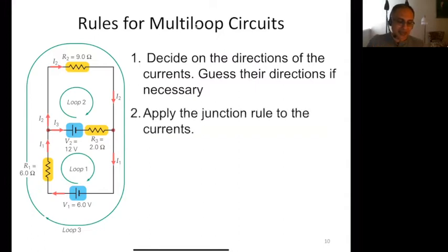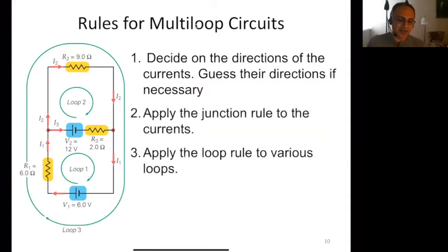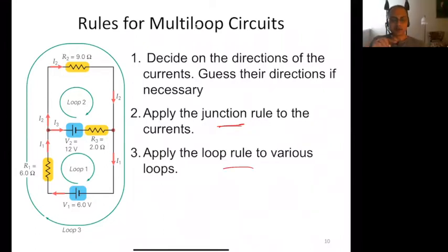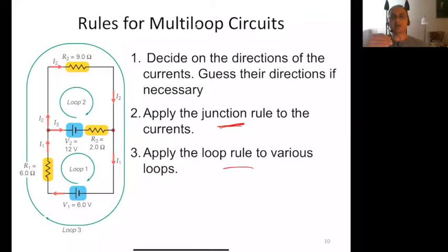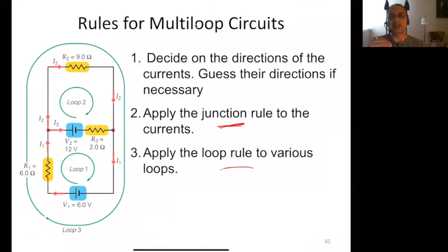You've already applied the junction rule to the currents to make sure they're consistent. The next thing you do is apply the loop rule to various loops. Suppose there are three unknown currents — one equation comes from the junction rule, so you need two more. Apply the loop rule twice to pick two loops and get two more equations. Your goal is three equations for three unknowns, or two equations for two unknowns.